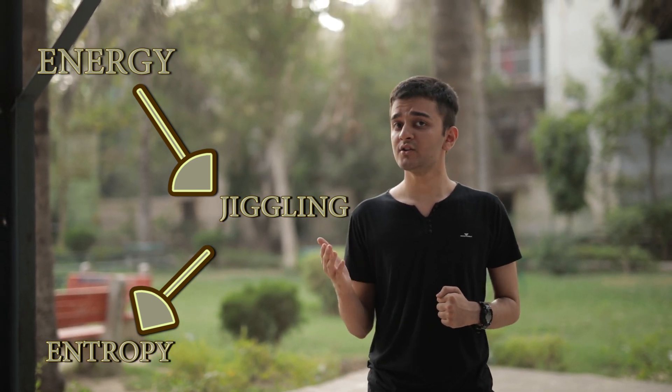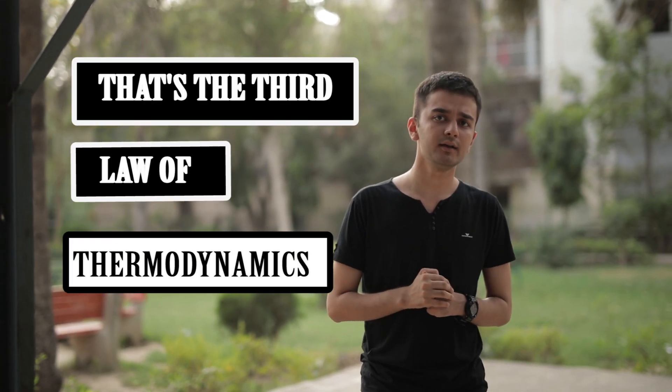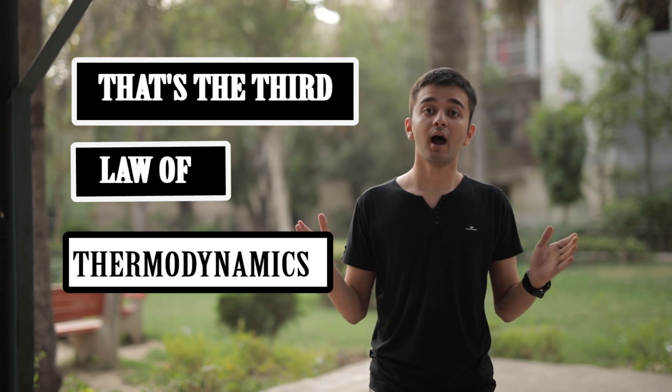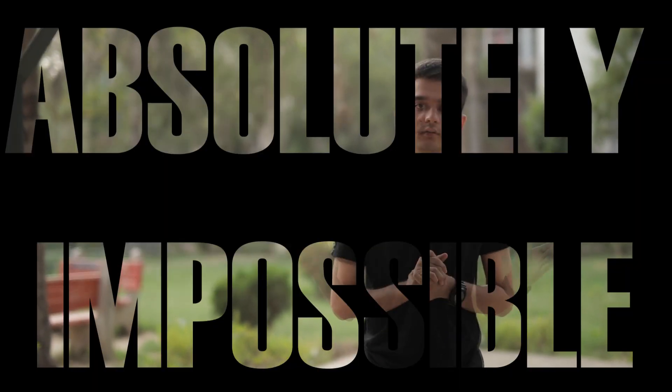And so, its entropy can never be zero. If the entropy can't be zero, the temperature can't possibly be zero Kelvin. And therefore, absolute zero is absolutely impossible.